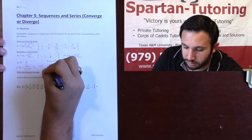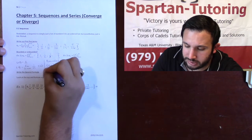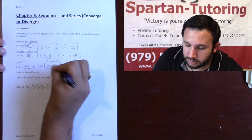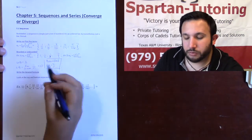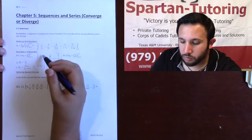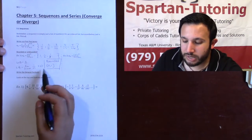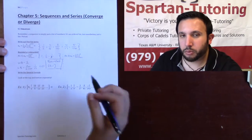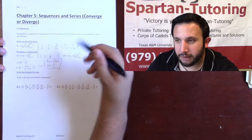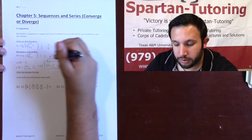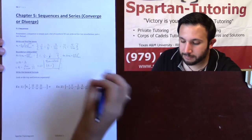Therefore this is a bounded sequence, bounded on the interval (0, 1]. Notice I put a parenthesis around 0 and a bracket around 1, because 1 actually exists in the list, but the sequence only approaches 0 and never equals it.